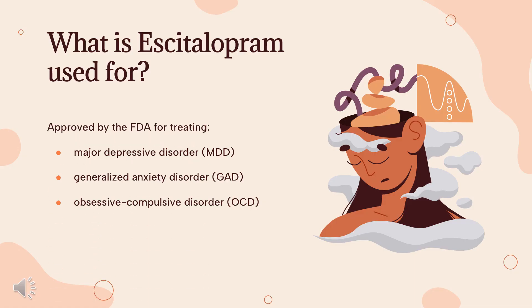What is escitalopram used for? Escitalopram is indicated for the acute and maintenance treatment of major depressive disorder (MDD) in adults and pediatric patients 12 years old and older, and for the acute treatment of generalized anxiety disorder (GAD) in adults and pediatric patients 7 years old and older. It is additionally indicated for symptomatic relief of obsessive-compulsive disorder (OCD) in Canada.